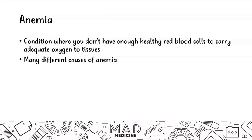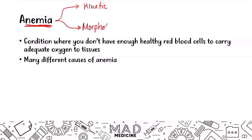When it comes to evaluating an anemia you can go with one of two approaches. Anemia can be classified based off of the kinetic approach or the morphologic approach. Depending on which approach you go for, you're going to have different lab value findings and different findings in general.